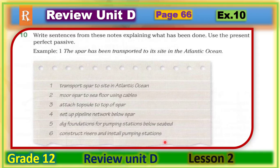Exercise 10: write sentences from these notes explaining what has been done. Use the present perfect passive. The present perfect passive is formed by: have or has + been + the past participle of the verb. Let's look at the first example.